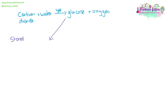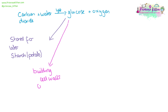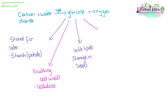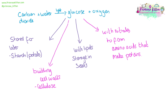The glucose produced in photosynthesis is used for lots of different things. It can be stored for later — the plant intends to use this itself, but if it stores it as starch, we might come along and use it, for example, potatoes. It can be used for building more parts of the plant, for example using cellulose to build cell walls. Along with lipids, it can be stored in seeds to provide energy for the next generation to grow. And with nitrates taken up by the roots, it can form amino acids that make proteins.